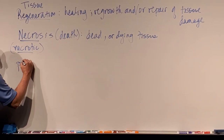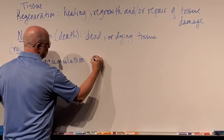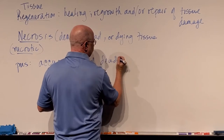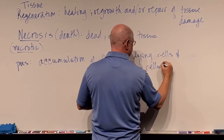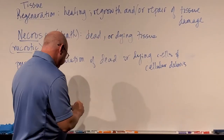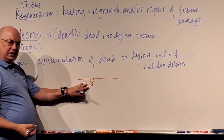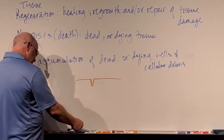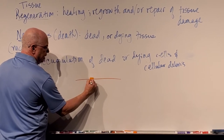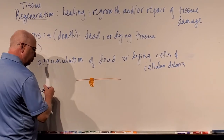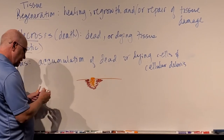One form of tissue necrosis is pus. Pus is an accumulation of dead or dying cells and cellular debris. So, if I have some skin here and I have a little rip in the skin — which we would call a laceration — if some bacteria got into the tissue and the tissue starts dying and we start seeing pus appear around it, and around that it's very red and swollen and inflamed, then that is pus.